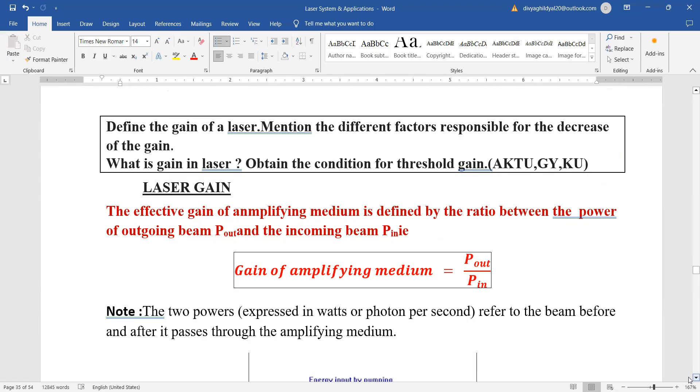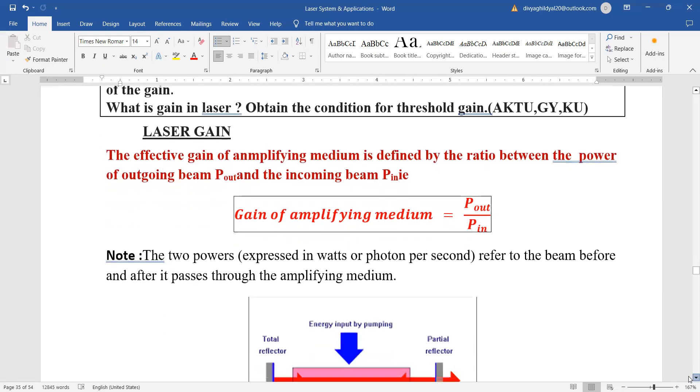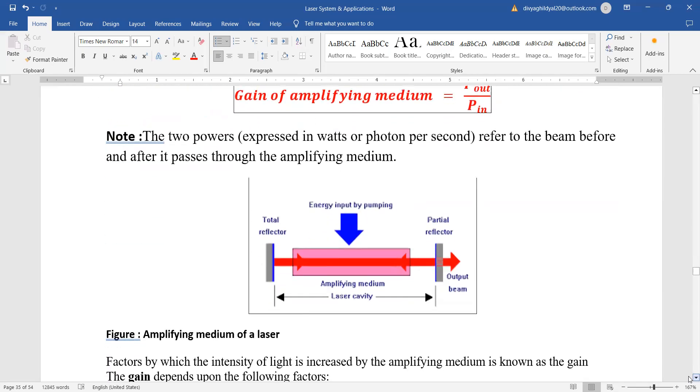The effective gain of an amplifying medium is defined as the ratio between the power of the outgoing beam divided by the power of the incoming beam. This is gain of amplifying medium. You will come across numerical problems on this formula. The two powers can be expressed in watts or photons per second.